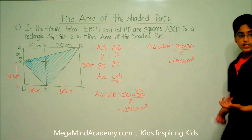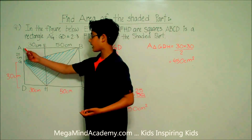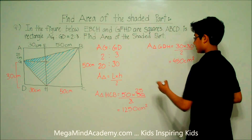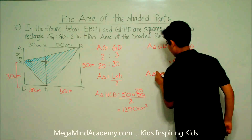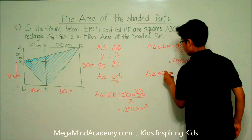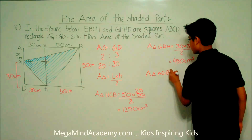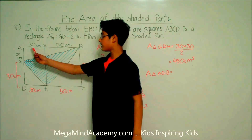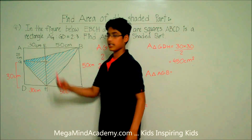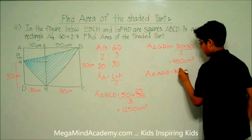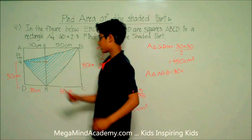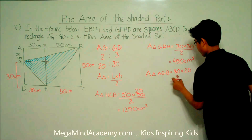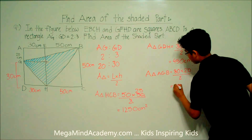Now let's find the area of triangle AGB. We can see that the length is equal to 30 plus 50 centimeters, which equals 80 centimeters, times the height, which is 20 centimeters, divided by 2, which equals 800 centimeters squared.